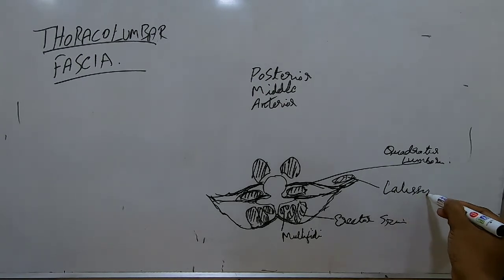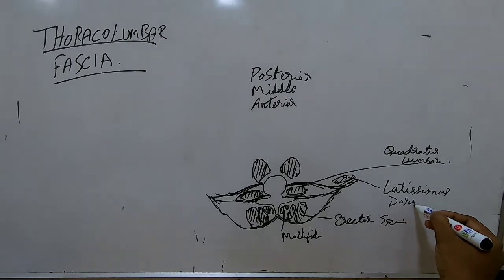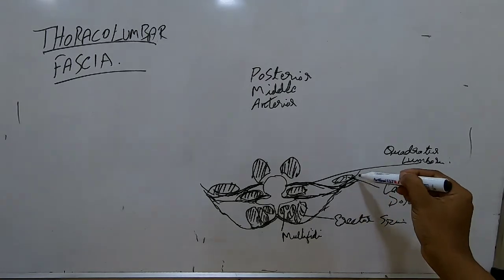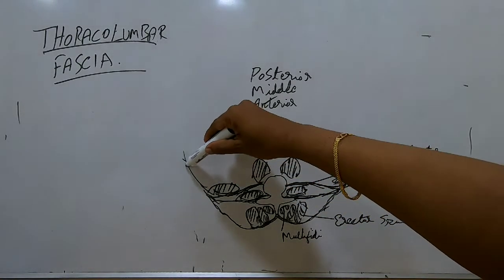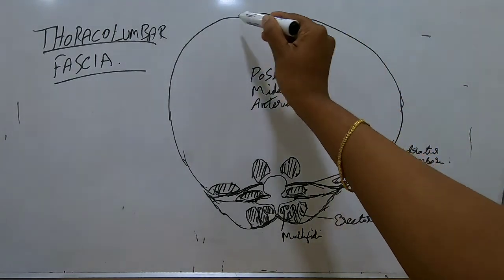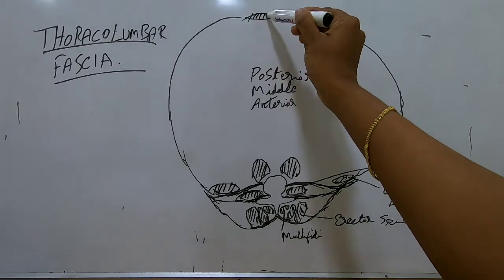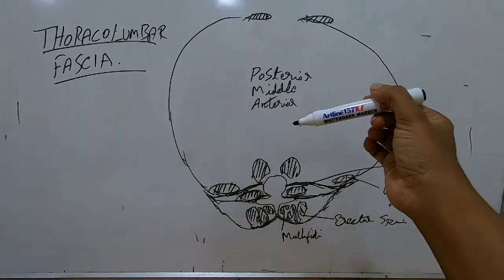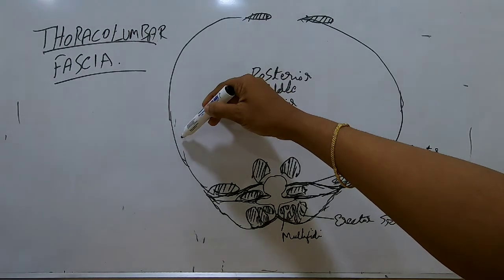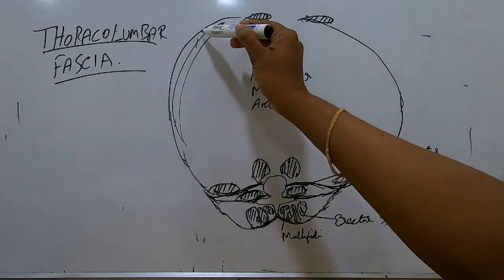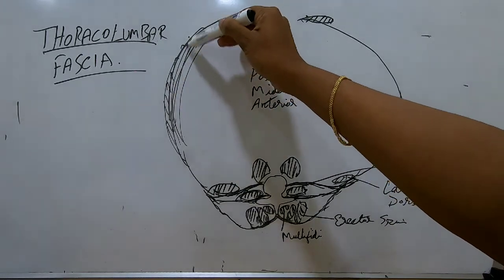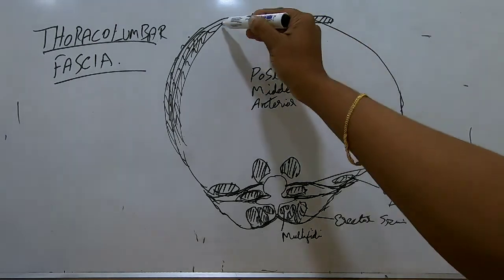All three layers connect with the latissimus dorsi on both sides, and then come anteriorly to form connections with the abdominal muscles. The abdominal muscles involved are: the deepest is transverse abdominus, then internal oblique, and then external oblique - three muscles.